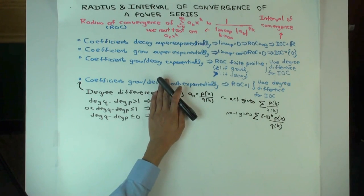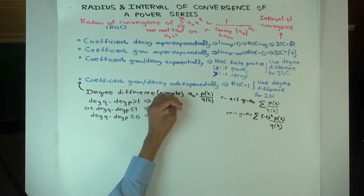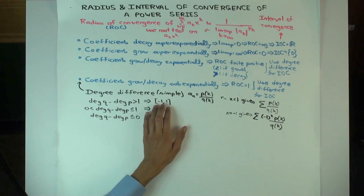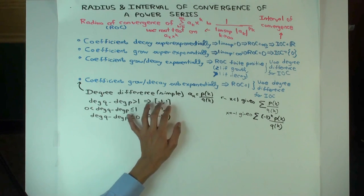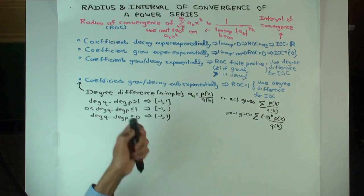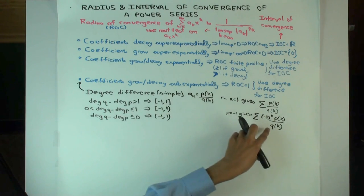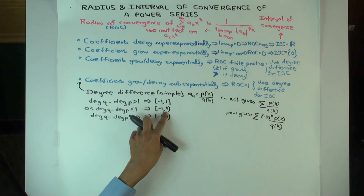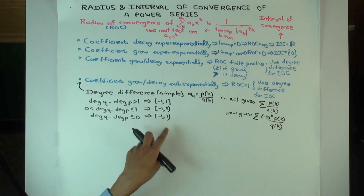If the degree difference is greater than one: at x equal to one it converges, and at x equal to minus one it also converges, so the interval of convergence is the closed interval negative one to one. If zero is less than the degree difference less than or equal to one: at x equal to one it diverges, and at x equal to minus one it converges by the alternating series theorem, so it's closed at minus one and open at one. And if the degree difference is less than or equal to zero, neither endpoint converges because the terms don't go to zero, so it's the open interval from minus one to one.